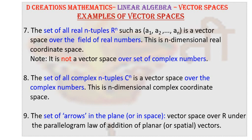Now, it is a vector space over field of real numbers. And in fact, it is also called n-dimensional real coordinate space. But as is logical, it is not a vector space over set of complex numbers.